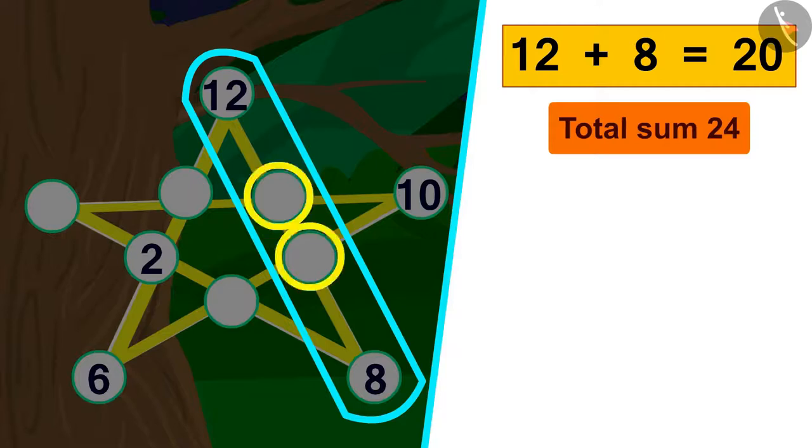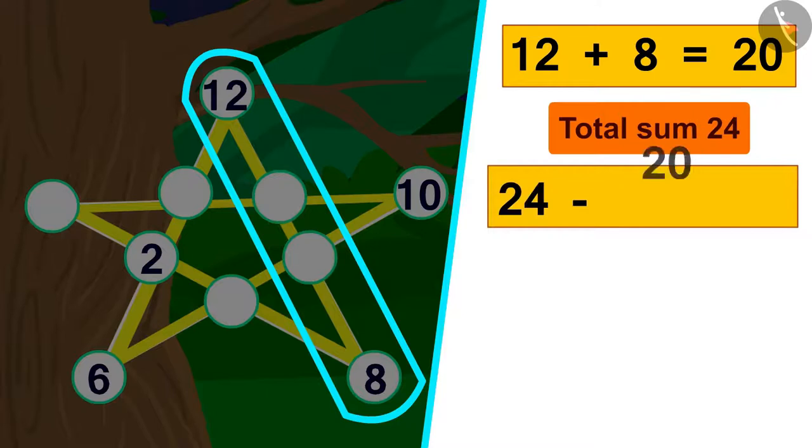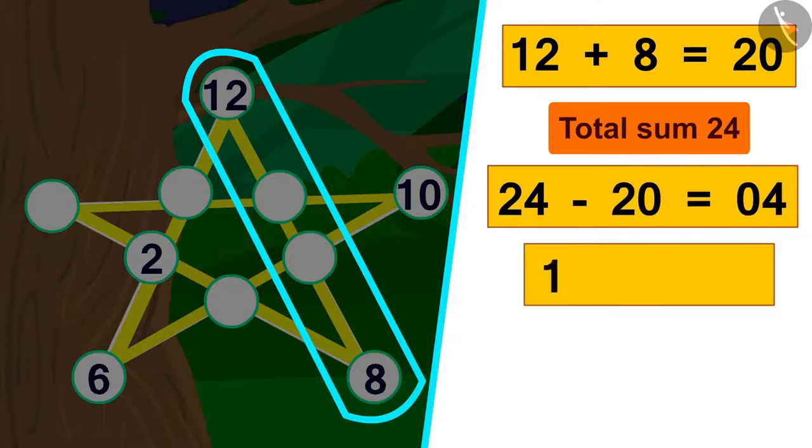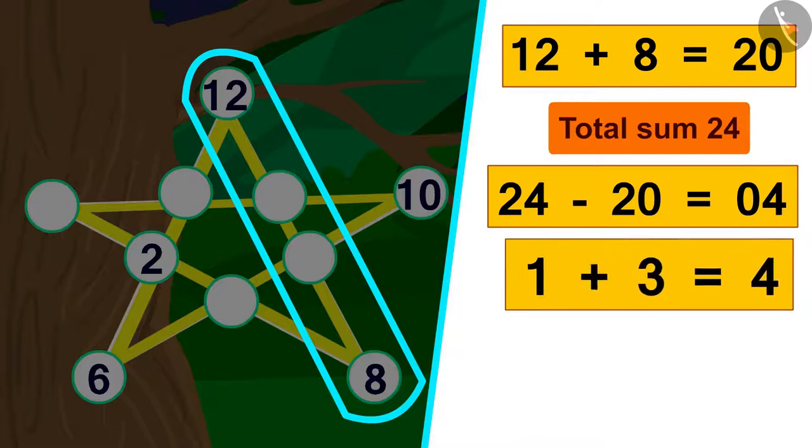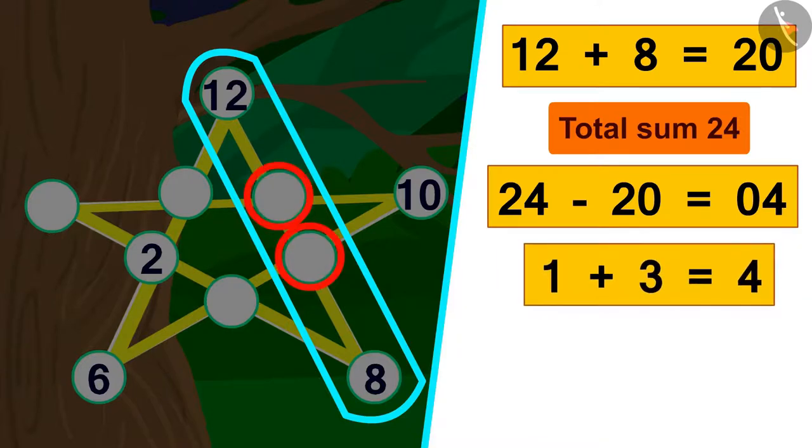This means that in these two spaces, we have to write numbers whose sum is 20 less than 24 or 4. We can write 4 by adding 1, 2, 3 and by adding 2 to 2. But when adding 2 to 2, the number is being repeated. That is why we will write numbers 1 and 3 in the empty spaces of this edge. On saying this, Bablu wrote the numbers 1 and 3 in the empty spaces of this edge.